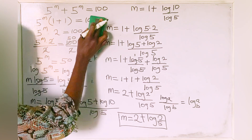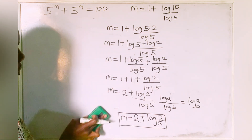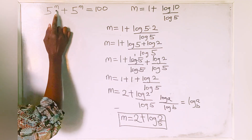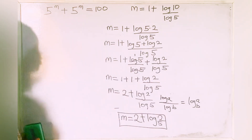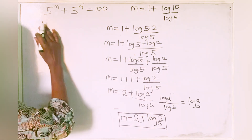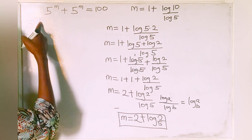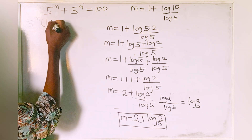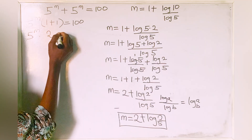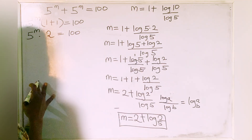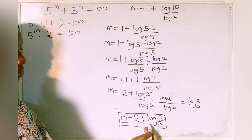Now let's check to see if we are correct. We go back to our initial problem: 5 to the power of m plus 5 to the power of m is equal to 100. We know that the value of m is 2 plus log 2 base 5. We have 5 to the power of m times 1 plus 1 equal to 100, which is 5 to the power of m multiplied by 2 is equal to 100.